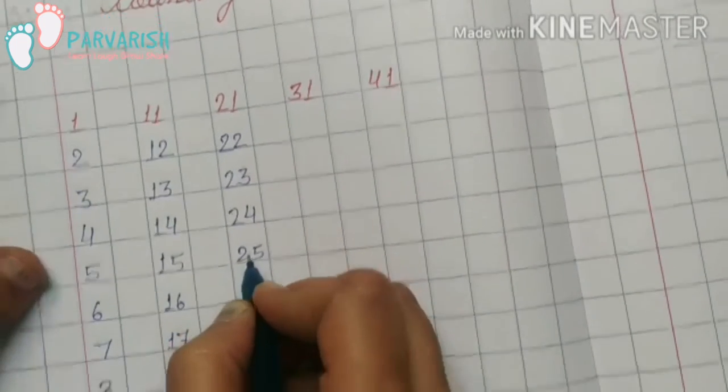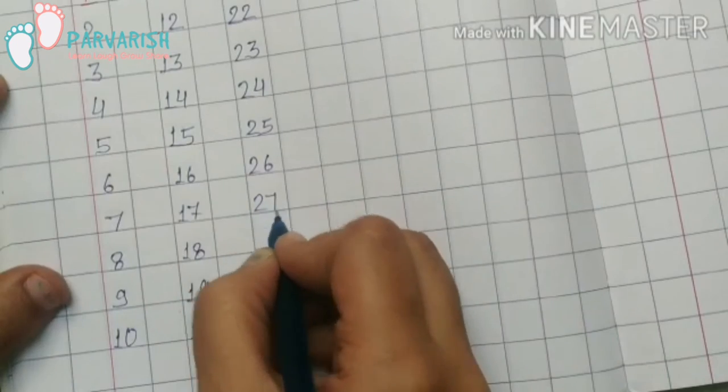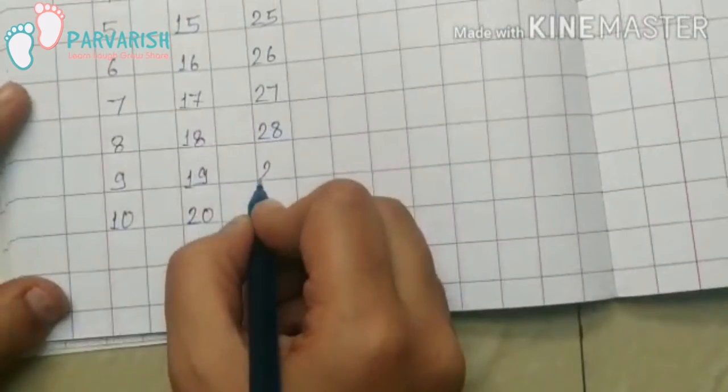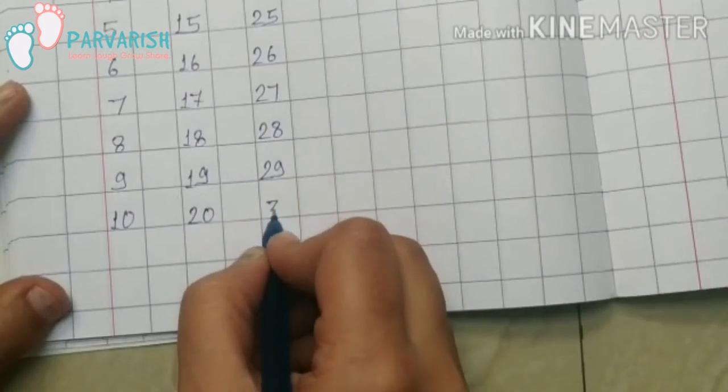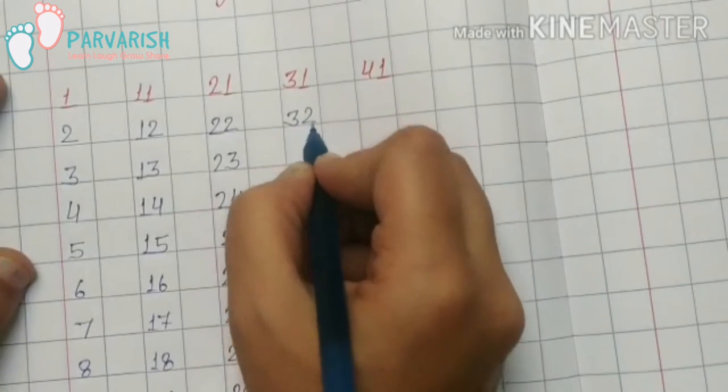2-4, 24; 2-5, 25; 2-6, 26; 2-7, 27; 2-8, 28; 2-9, 29; 3-0, 30.